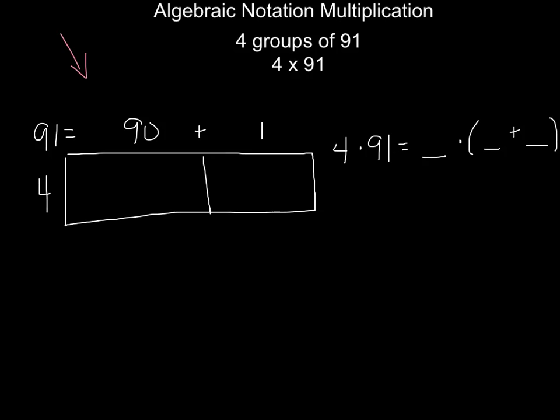Now on the left, we have an area model, and we can use that to give us a picture of what we're really doing. You can see how we have our factor of 4, and then we take our factor of 91 and break it into its place value components of 90 and 1. We're going to do the same thing in algebraic notation. The big difference here is that when we look at algebraic notation, it gives us a way to do this just with naked numbers, but still help us see what's going on.